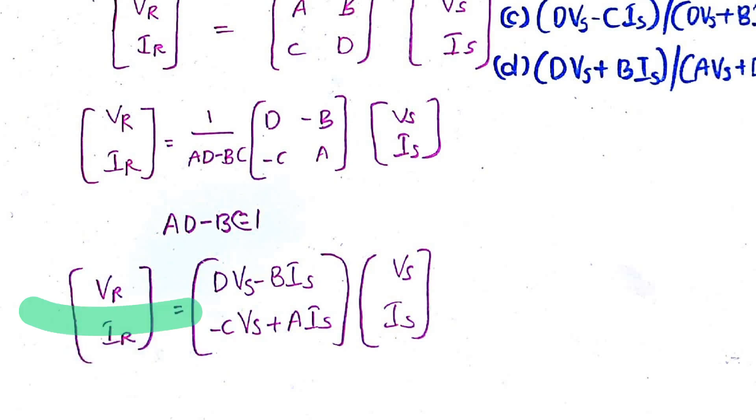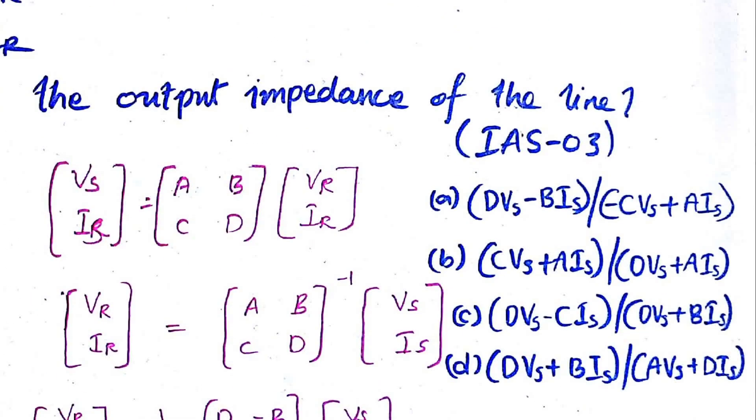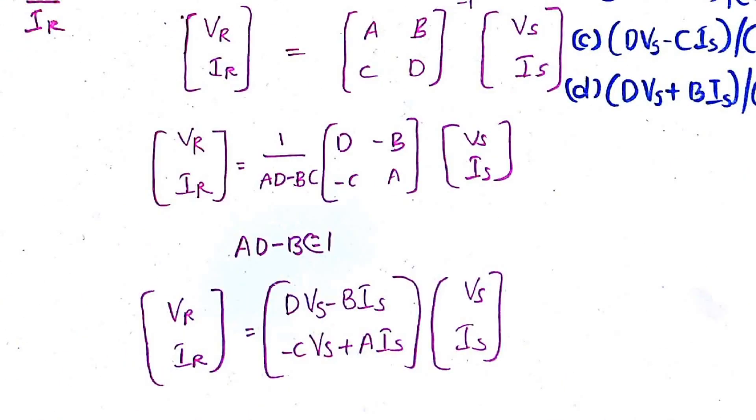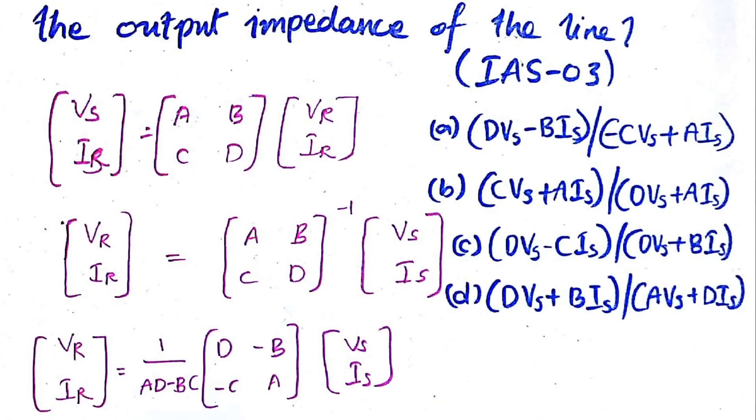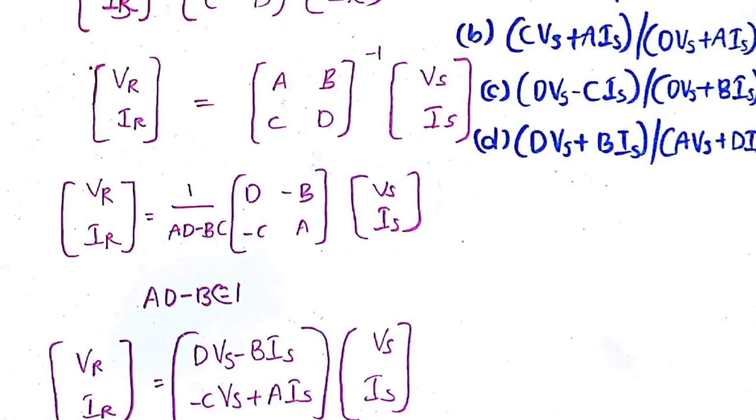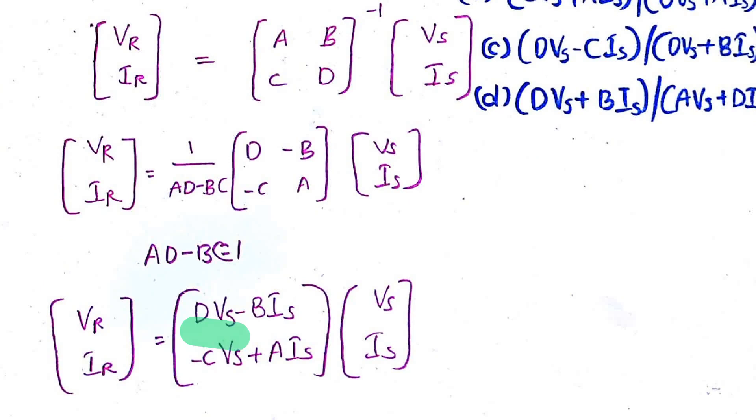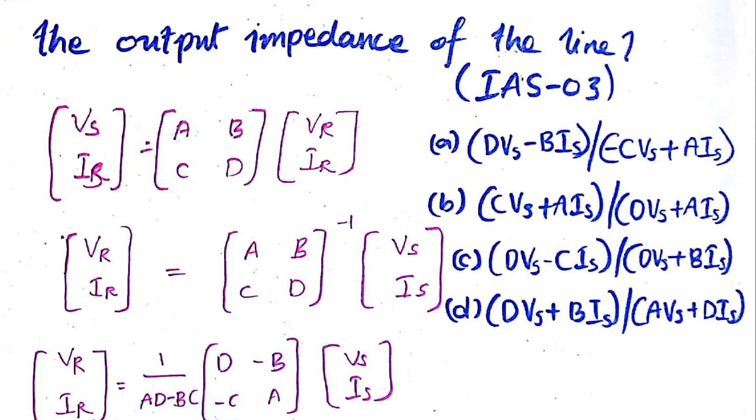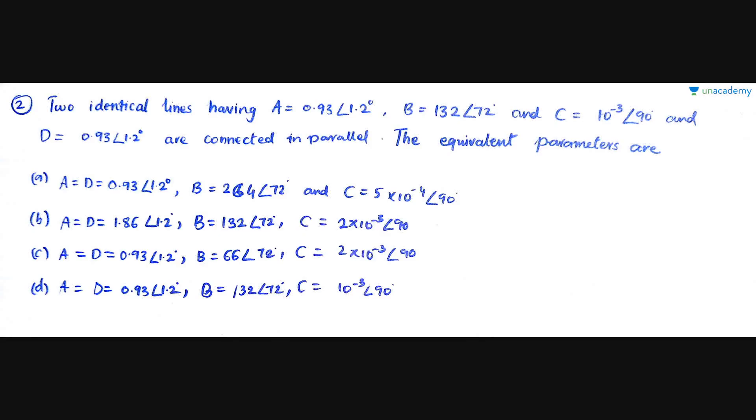What property is this? This is the reciprocal property. Hence, after solving you get this matrix. So [Vr, Ir] equals that matrix. You want Vr by Ir, so just divide everything - put a line in between. That's how it becomes. Your output impedance is going to be (D·Vs minus B·Is) divided by (-C·Vs plus A·Is). Option A is going to be your answer. Hope you understood.